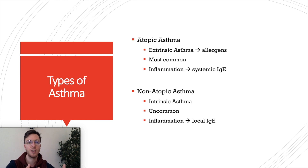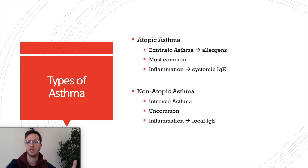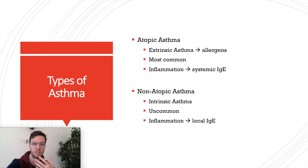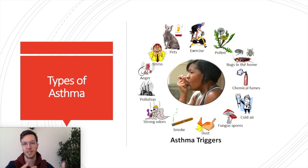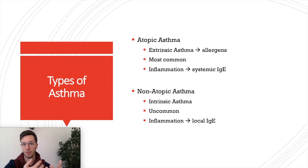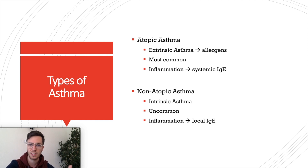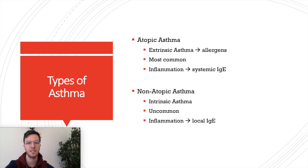Atopic asthma is by far the most common cause of asthma, and we will focus on it throughout this video. Atopic asthma is caused extrinsically — by factors outside of your body called stimuli — mostly allergens like pollen from trees or cigarette smoke. In people with atopic asthma, the lungs are hypersensitive to those allergens, and when you inhale them, you start an inflammation response, leading to systemic IgE release by mast cells.